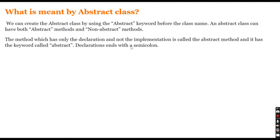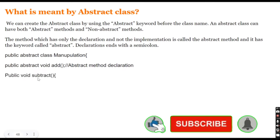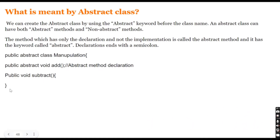Let's see a practical demo of how to declare an abstract class and abstract method. Here we have an abstract class using the keyword 'public abstract class Manipulation'. Inside this class we have an abstract method — it has the abstract keyword and only a declaration ending with a semicolon. There is also a non-abstract method with opening and closing curly braces containing implementation.